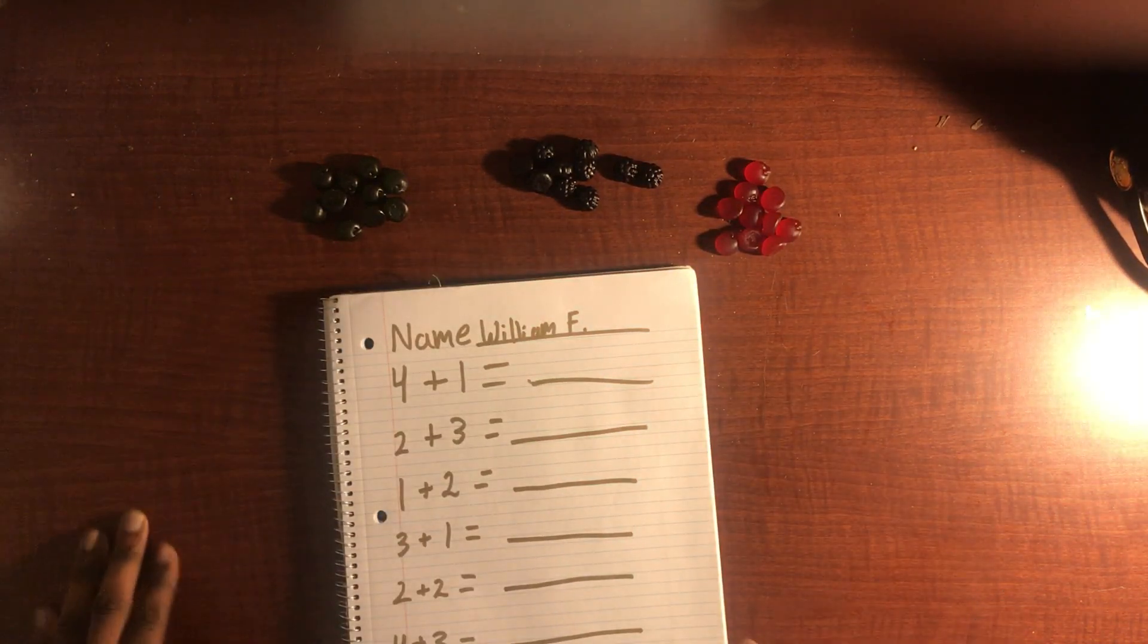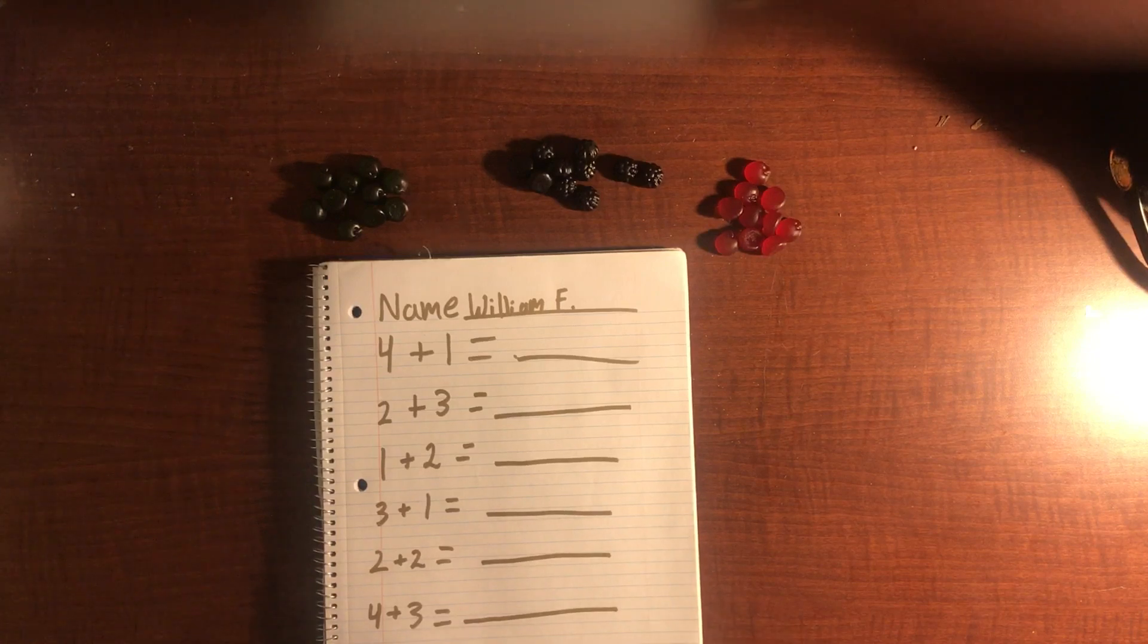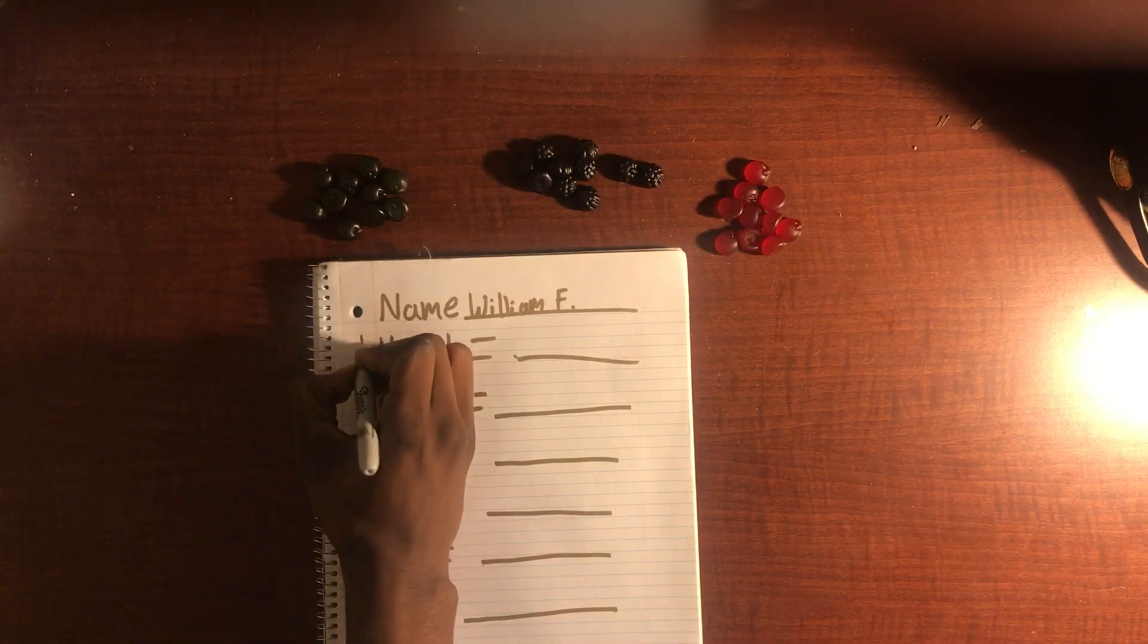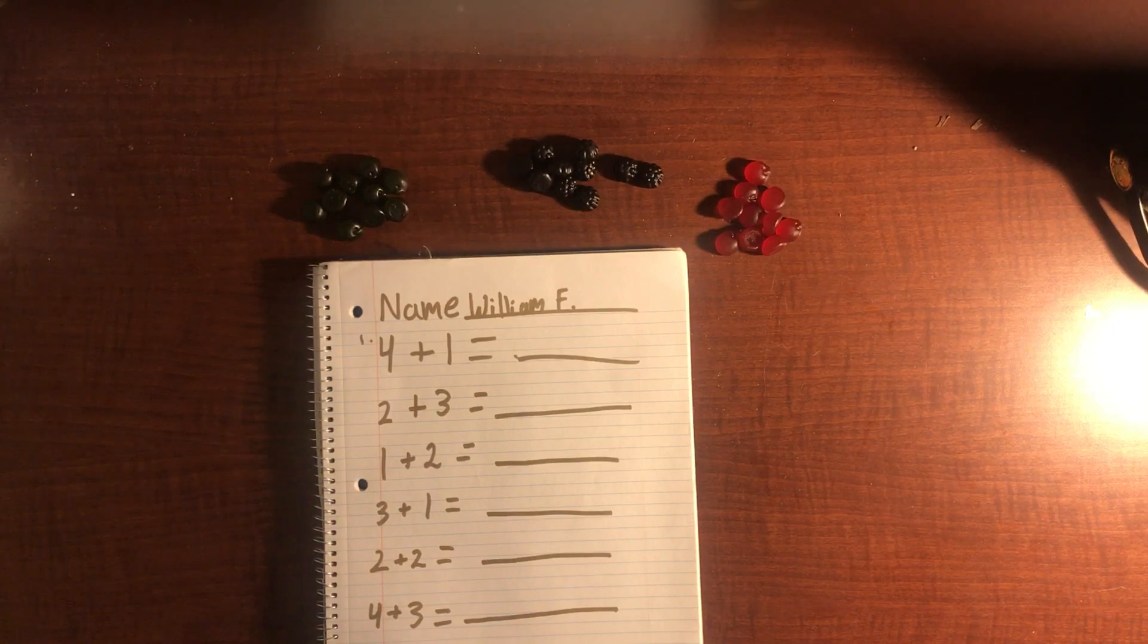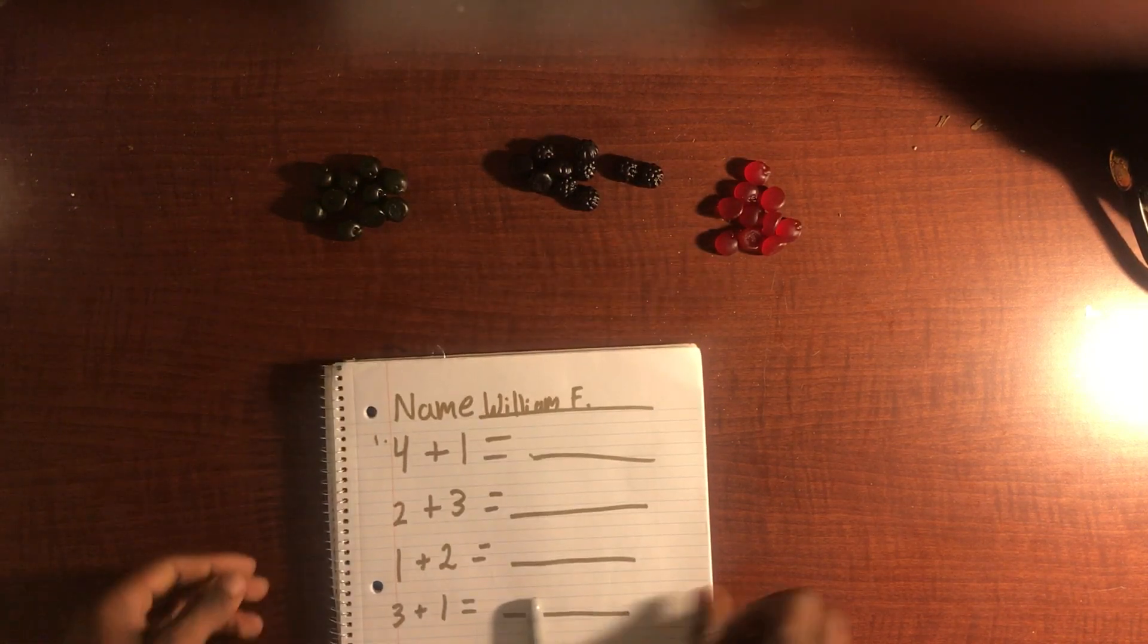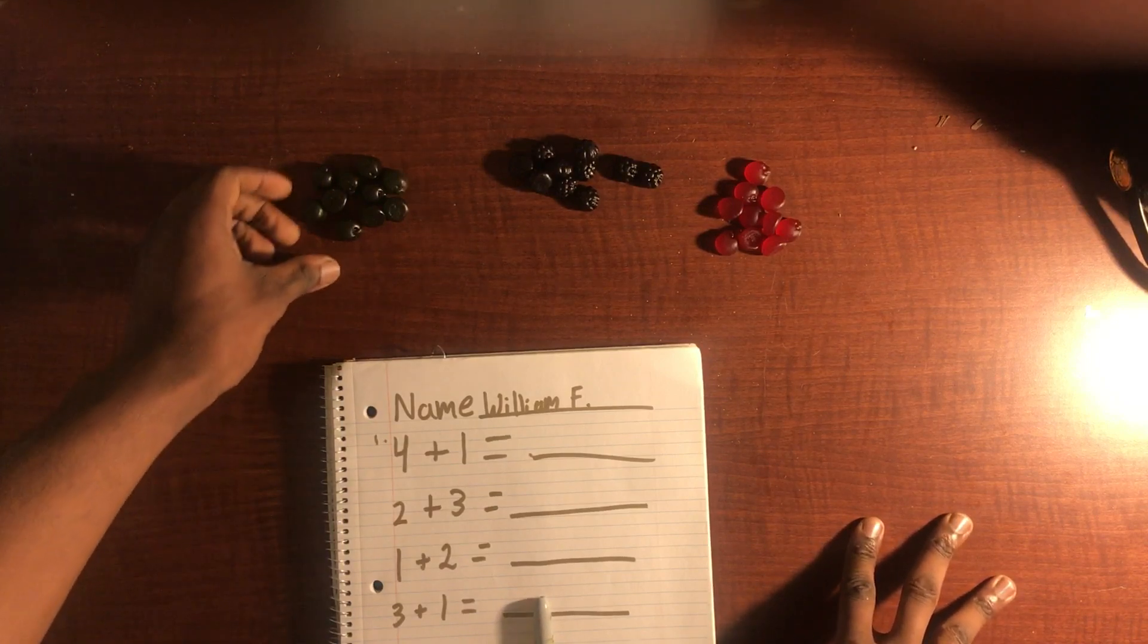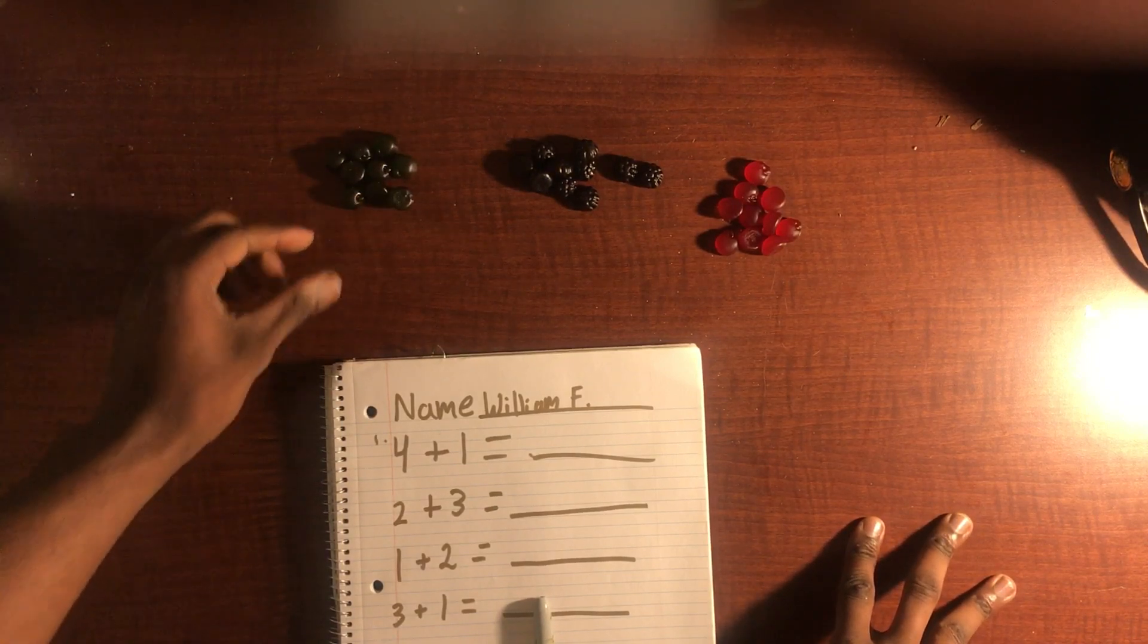So we're going to go ahead and get into the addition portion. Our first question is going to be four plus one. If we look here, we can go ahead and pull down four green fruit gummies.